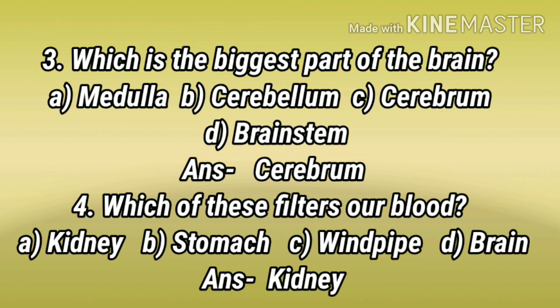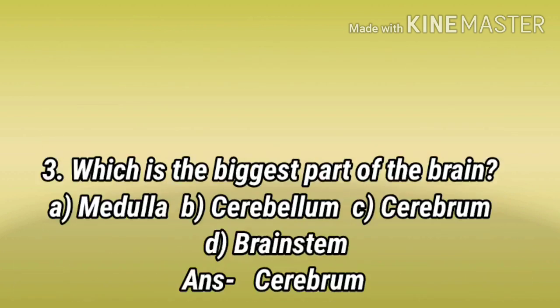Number 4: Which of these filters our blood? A. Kidney. B. Stomach. C. Windpipe. D. Brain. Answer: Kidney.